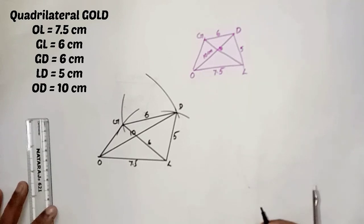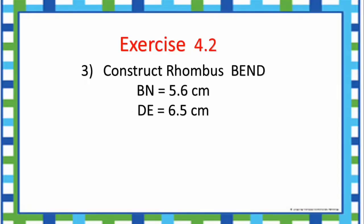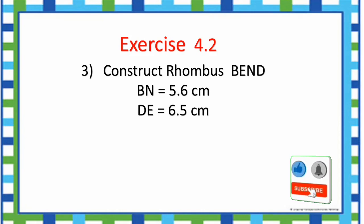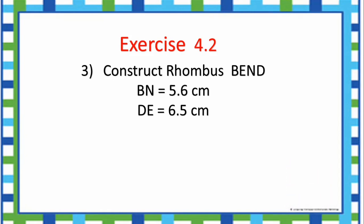Hope you all understood. Third question: Construct rhombus BEND. BN is equal to 5.6 cm, DE is equal to 6.5 cm. Now we can see how to construct rhombus BEND.